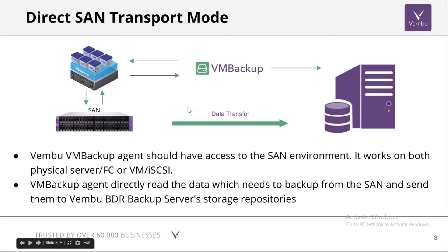In Direct SAN transport mode, the SAN of the ESXi host is directly exposed to the Wambu VM Backup Agent, where the agent and the BDR server's storage repository are on the same network. When a backup request is made, the ESXi host sends only metadata information to the VM Backup Agent, and the actual data transfer is carried out in a faster method directly from the ESXi host to the BDR storage.